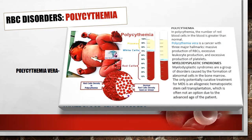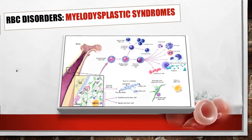In polycythemia, the number of red blood cells in the blood is greater than normal. Polycythemia vera is a cancer with three major hallmarks: massive production of red blood cells, excessive leukocyte production, and excessive production of platelets. Myelodysplastic syndromes are a group of disorders caused by the formation of abnormal cells in the bone marrow, and the only potentially curative treatment for MDS is allogeneic hematopoietic stem cell transplantation, which is often not an option due to the patient's advanced age.